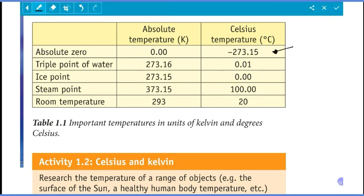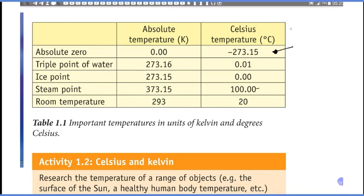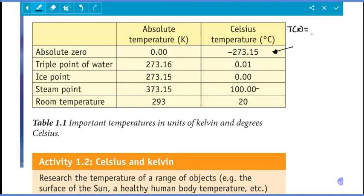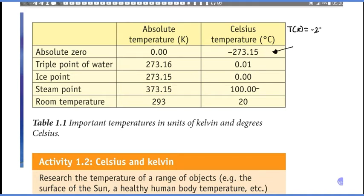The formula for converting between temperature scales is: temperature in Kelvin equals temperature in degrees Celsius plus 273. So absolute temperature in Kelvin equals Celsius temperature plus 273.